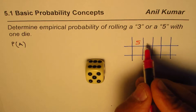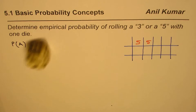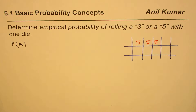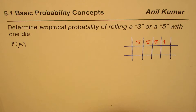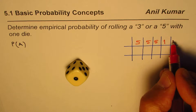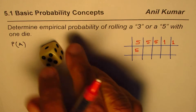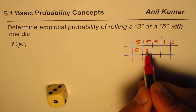Third roll: again 5. Fourth roll: we get 1. Fifth roll: again 1. Sixth roll: we get 5. Seventh roll: we get 1.